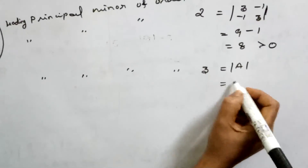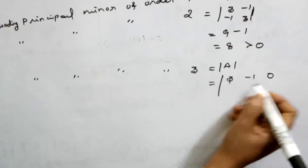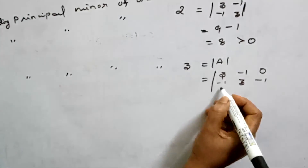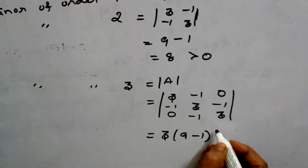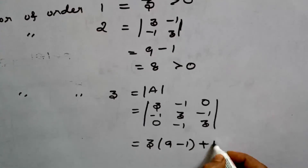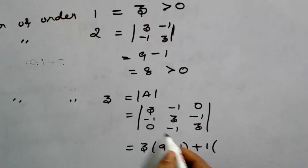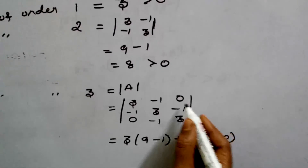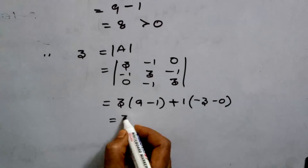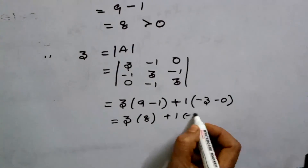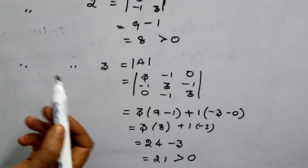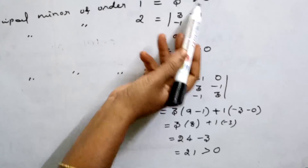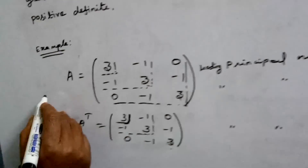The determinant of A is calculated by expanding along the first row. The value works out to 3 times (9 minus 1) minus (negative 1) times (minus 3 minus 0), giving 3 times 8 minus 3, which equals 24 minus 3, equal to 21. This is also greater than 0. Since all leading principal minors of order 1, 2, and 3 are positive, the given matrix A is a positive definite matrix.